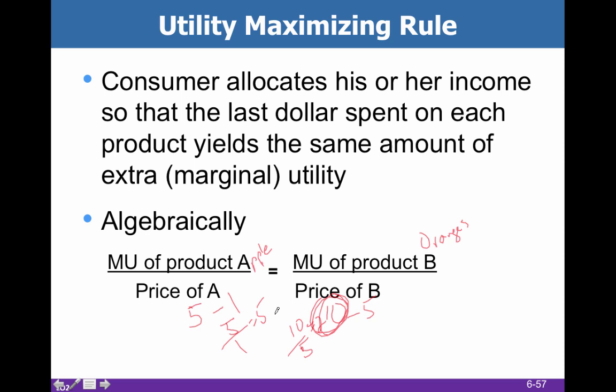Marginal utility per dollar equals 2 on the orange side and 5 on the apple side, so they are not equal in this example. That means I'm going to buy an apple because I get more marginal utility per dollar, but what I want to do is equalize these. I'm going to keep buying apples until I've lowered my marginal utility per dollar to being equal with an orange. I'm always going to buy apples when there's more marginal utility per dollar.